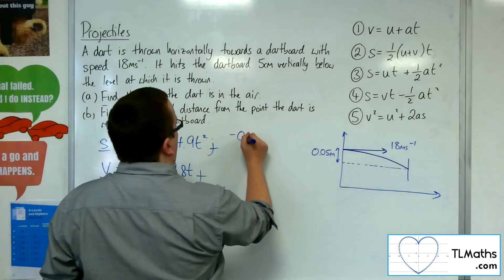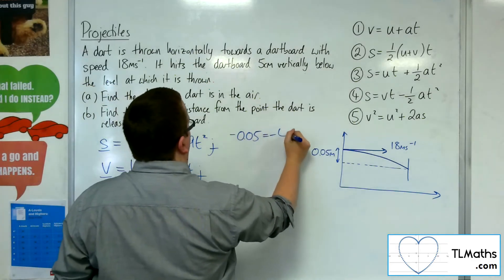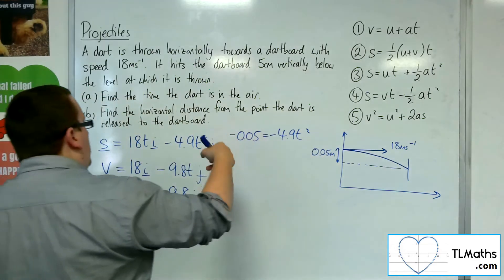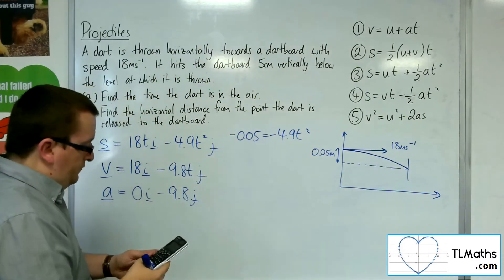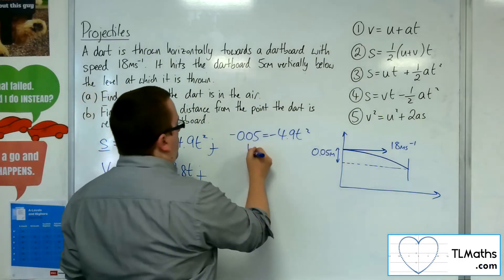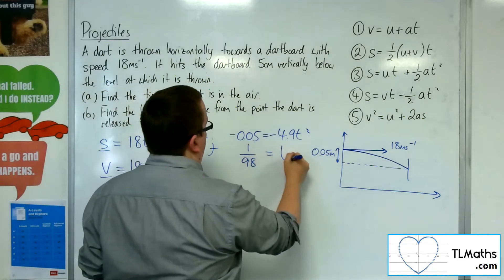So I would put minus 0.05 equal to the minus 4.9 t squared. So if I divide both sides by the minus 4.9, so 0.05 divided by 4.9, and I get 1 over 98 is t squared.